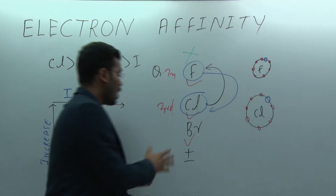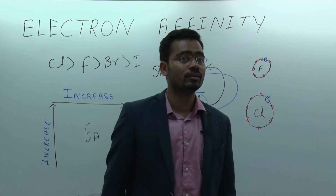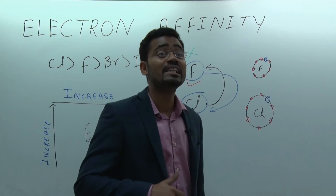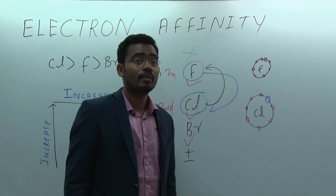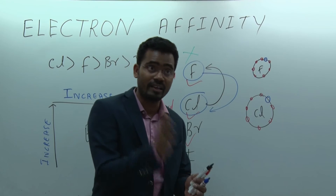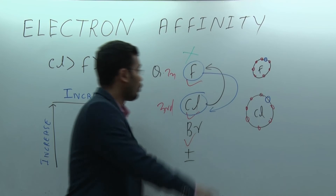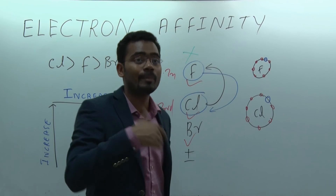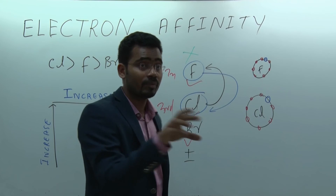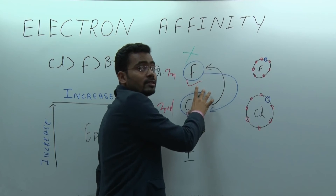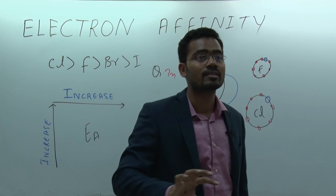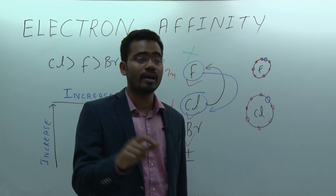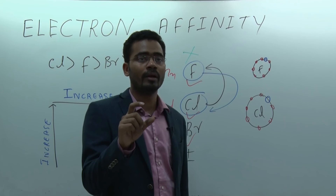A student asks: iodine has larger size so there is less repulsion — why isn't iodine higher than bromine? The reason is that iodine has less attracting power, so it has less release energy. The primary factor is release energy, then repulsion. In iodine, the attraction is very less, so overall less energy is released. As a rule, third period elements have higher electron affinity compared to second period elements in the same group.